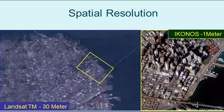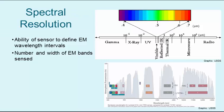As remote sensing technologies and computing powers advance, spatial resolution is getting greater and greater and has resulted in some commercially available satellite imagery with 1 foot pixels. Needless to say, there are a myriad of spatial resolutions that are dependent on sensor specifications and differing platforms, which range from drones to airplanes to satellites.